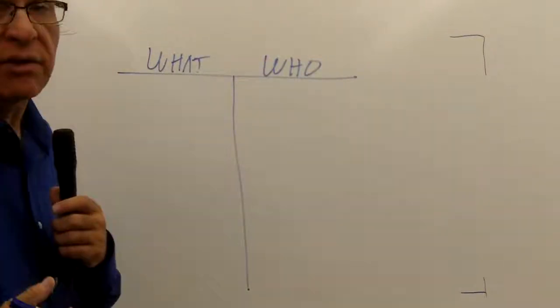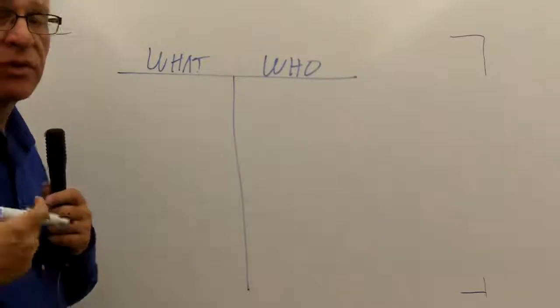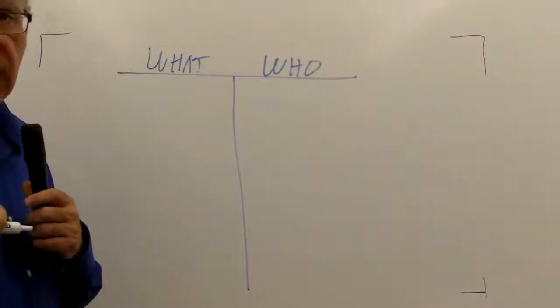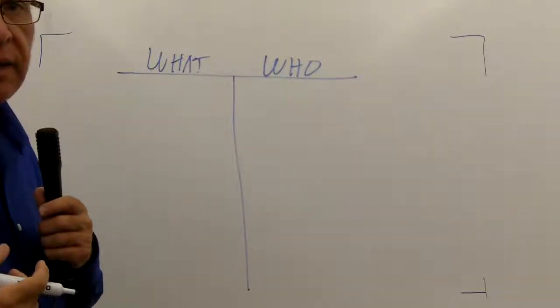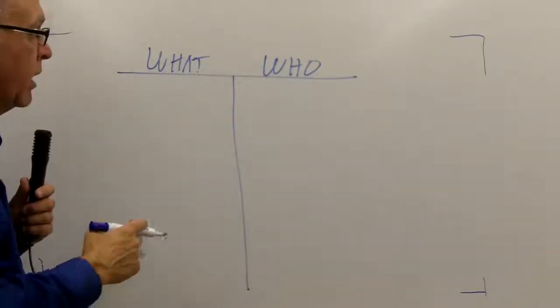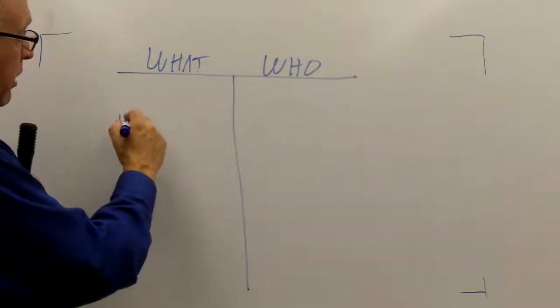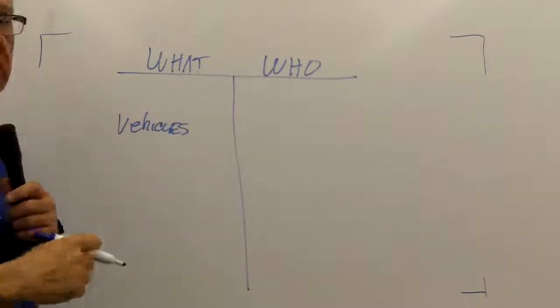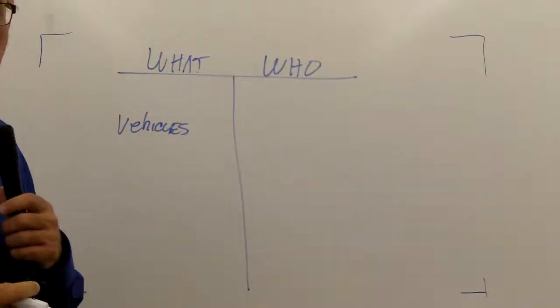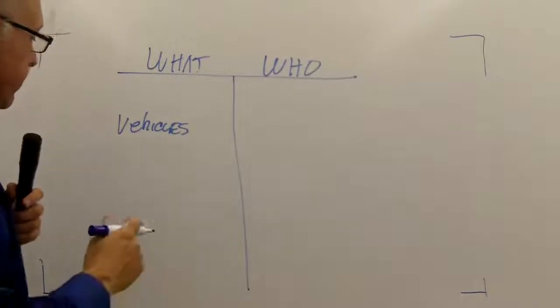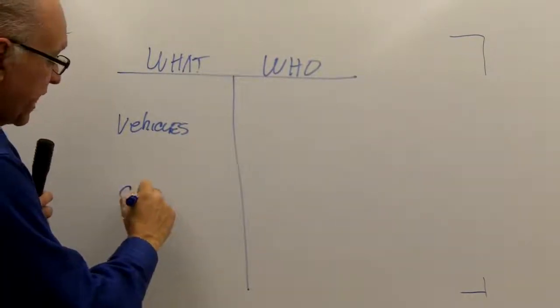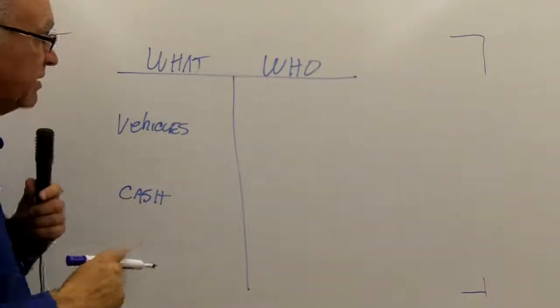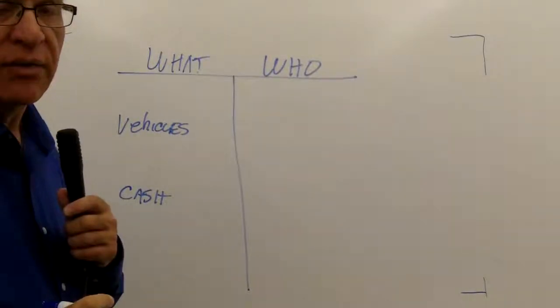Now we know that what are assets, and that the who side are our equity account and liabilities. For instance, vehicles will go under this what side. We will have a vehicle account, because that's an asset. We could also have a cash account. Hopefully we have a cash account. That's also going to be on the what side.